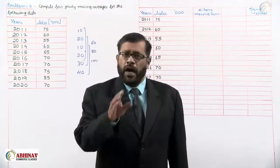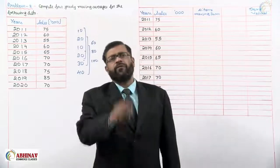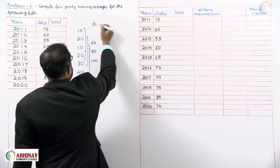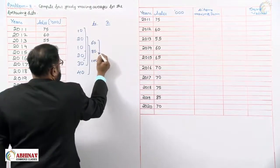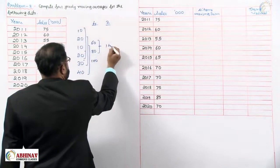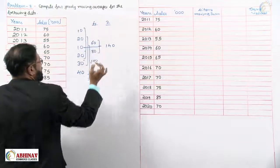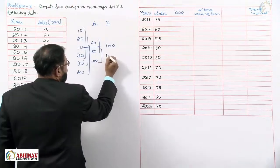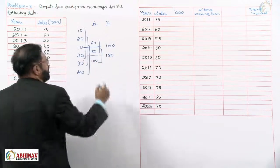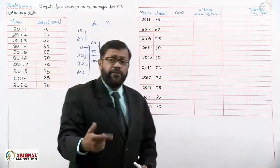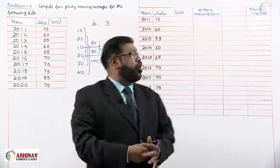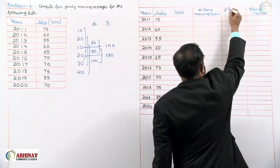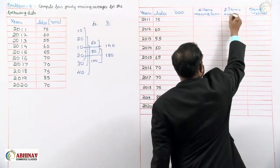So what we do is, after computing the four items moving sum, we prepare one more column showing the two items moving sum. For example, adding 60 plus 80 gives 140 in the middle, which then comes exactly for that particular year. When dealing with four-yearly moving averages, we must prepare this one extra column of two items moving sum.